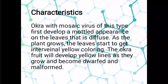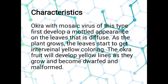What are the characteristics of this virus? Okra with mosaic virus first develops a mottled appearance. As the plant grows, the leaves start to get interveinal yellowing. The okra fruit will develop yellow lines as they grow and become dwarf and malformed. It is very important to be aware of the signs in order to save our plants from being harmed by those viruses.